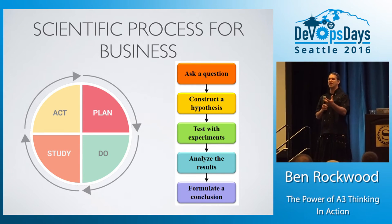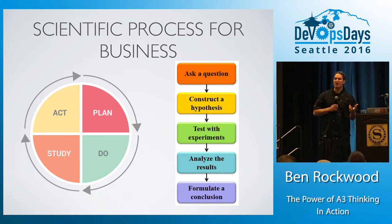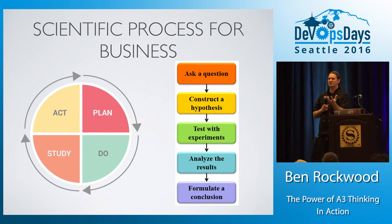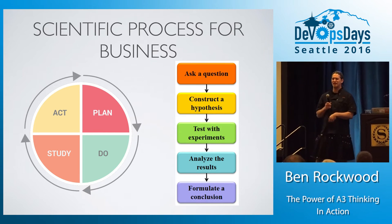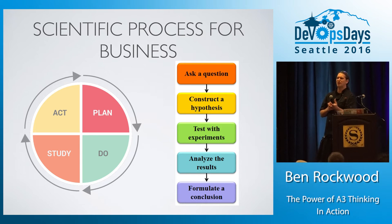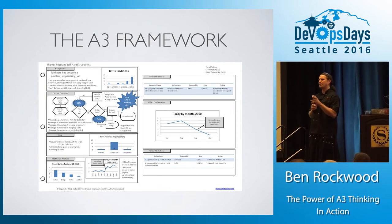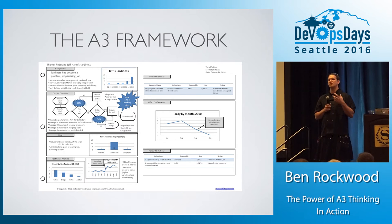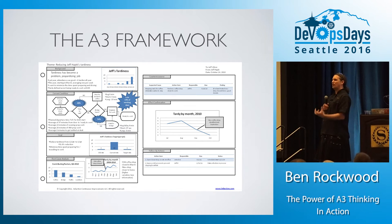In PDCA: we plan — we have an idea, I think this should be done. Then we go and perform some experiments. Then we look at those experiments and say, does this actually match what I thought I was going to see? What does this tell me? And then act — we finally decide what to do with it. It's really performing experiments and then deciding what you do with those experiments. And this is where PDCA kind of goes off the rail, so Toyota came up with the A3 framework.